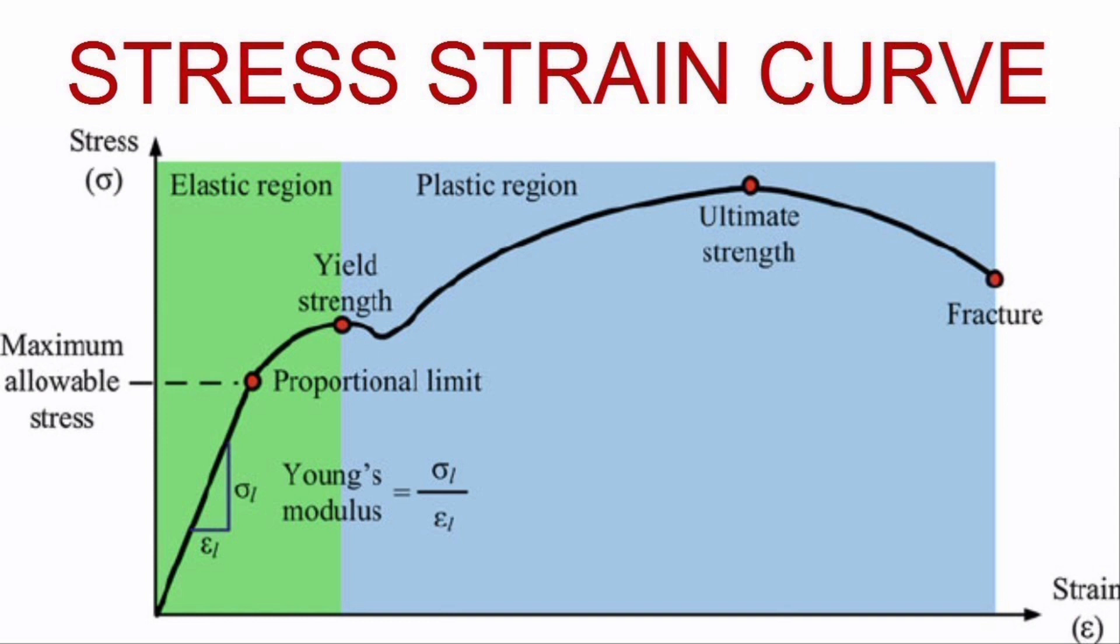Stress can be tensile or compressive. Strain is the change of length divided by original length, therefore it is a ratio. Cortical bone fractures at 2% strain.